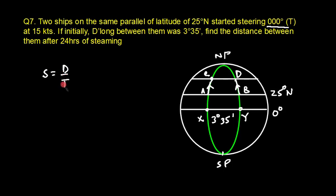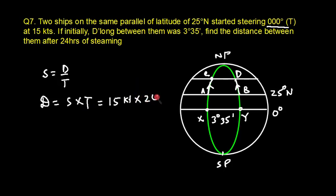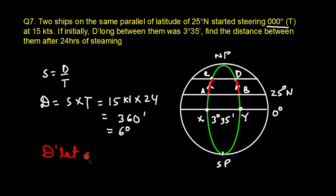Speed is 50 knots and time is 24 hours, so Distance = Speed × Time = 50 × 24 = 1200 nautical miles, which equals 1200 minutes or 20°. Wait — that gives D.Lat = 6°. So the new latitude is 25° + 6° = 31°N.